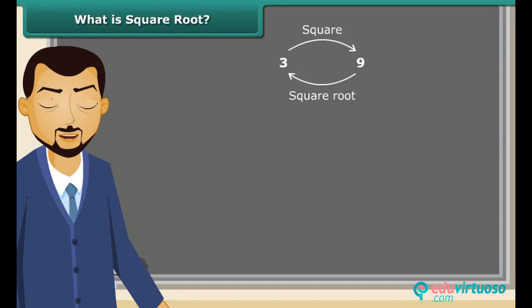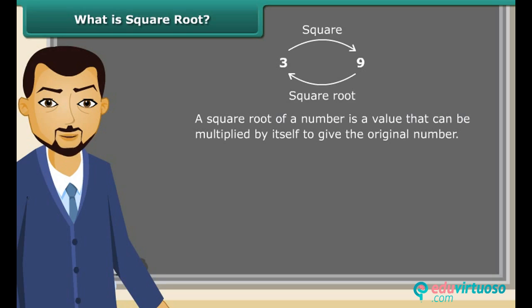Square root is an inverse operation of squaring. It is a value that can be multiplied by itself to give the original number. So we can say when 4 is multiplied by 4, we get 16. Which means 4 is a square root of 16. A square root is represented by a special symbol. It is called the radical. We can use it like this: square root of 25 is 5.